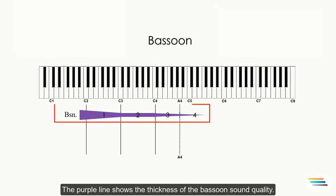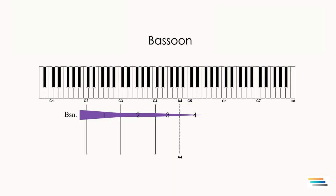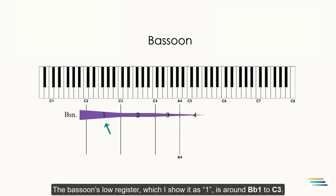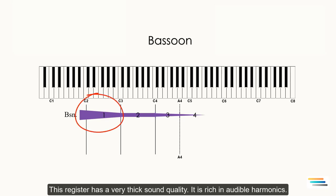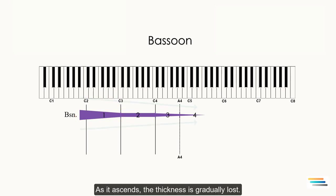The purple line shows the thickness of the bassoon sound quality. The bassoon's low register, which I show as 1, is around B♭1 to C3. This register has a very thick sound quality. It is rich in audible harmonics. As it ascends the thickness is gradually lost.